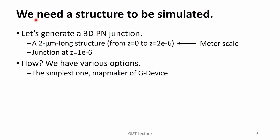We need a device structure to be simulated. Let's generate a three-dimensional PN junction. It's actually 1D-like along the G direction, and its length is 2 micrometers — from G equal to 0 to G equal to 2 times 10 to the minus 6. Here, the length is written in the meter scale. Let's assume that the junction appears at G equal to 10 to the minus 6. The mapmaker command of the G device will be used.